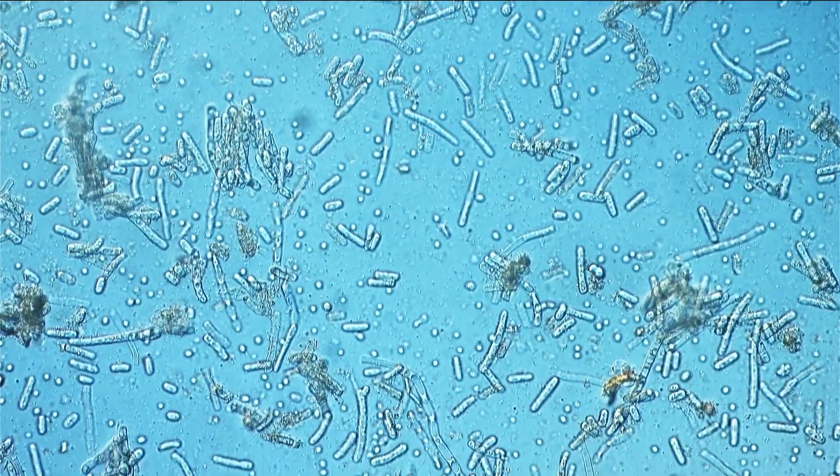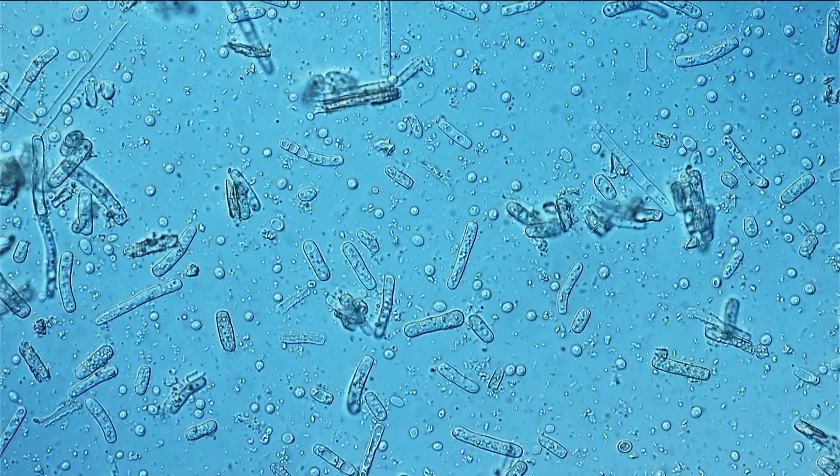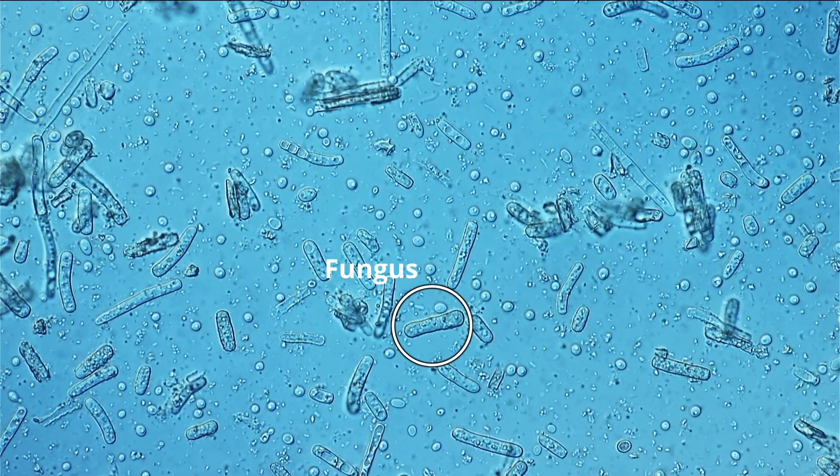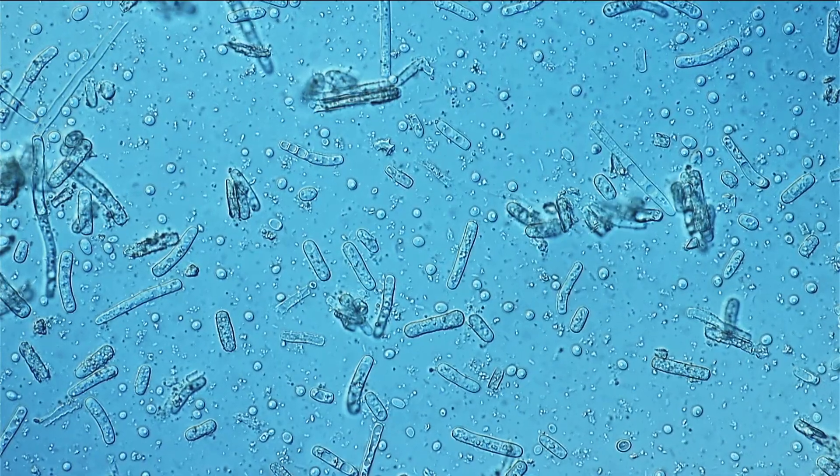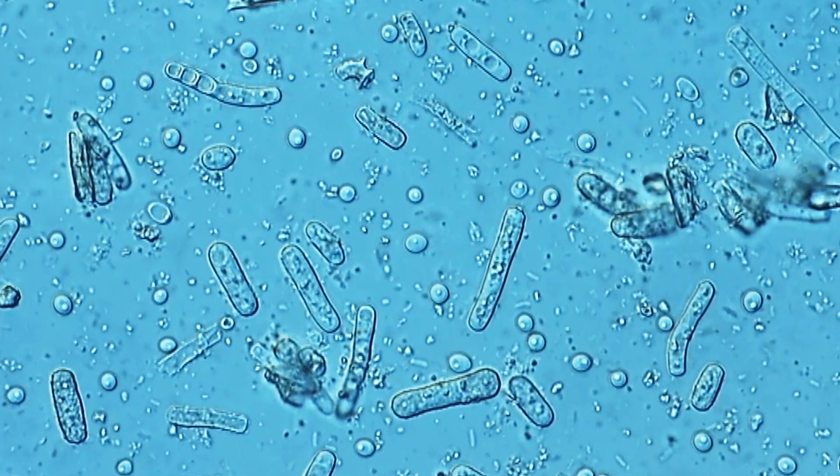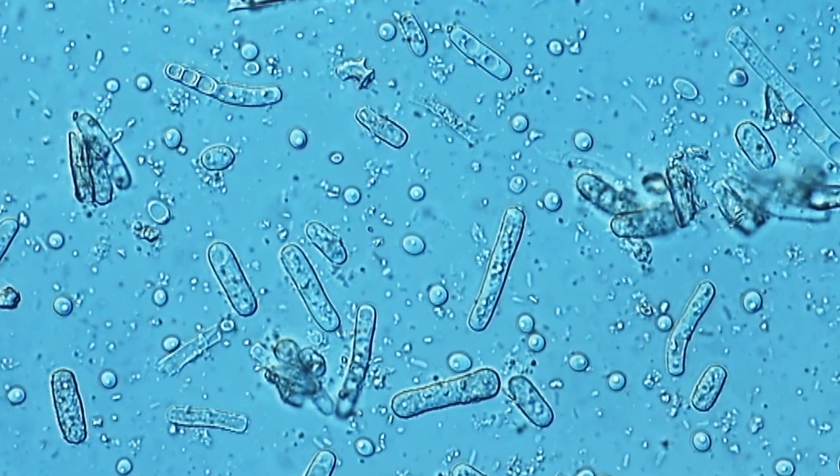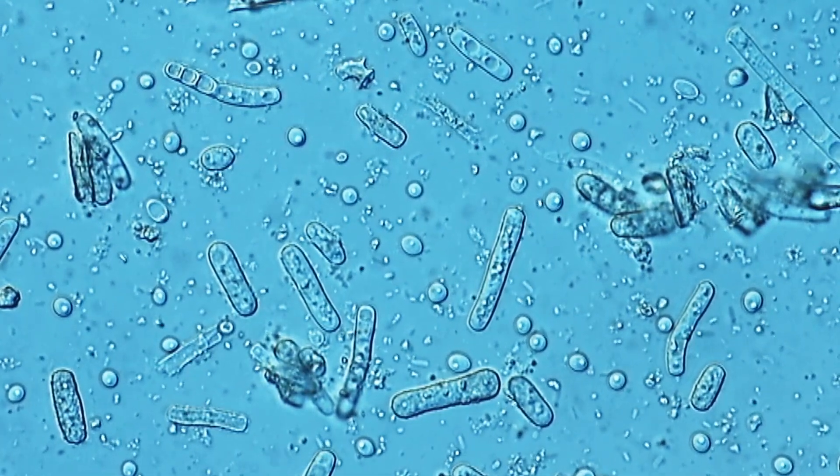You can see those long structures here. Now these are clearly not bacteria, they're way too big for that. They're the cells of a fungus. And the bacteria themselves, they are significantly smaller, and they can be seen as tiny small objects between the cells of the fungus. This kind of shows quite nicely that there is a whole microbial ecosystem growing on the cheese.